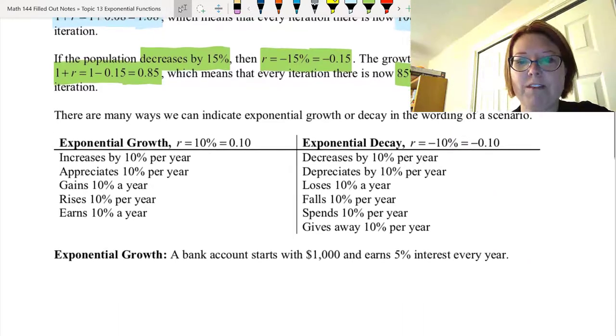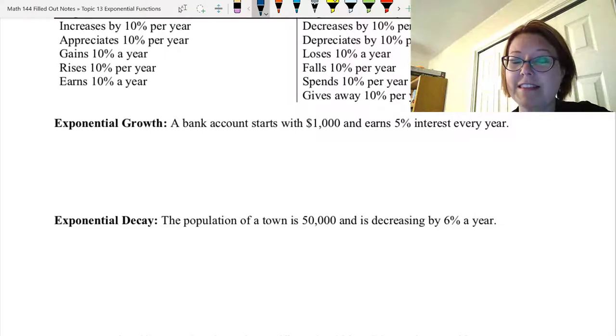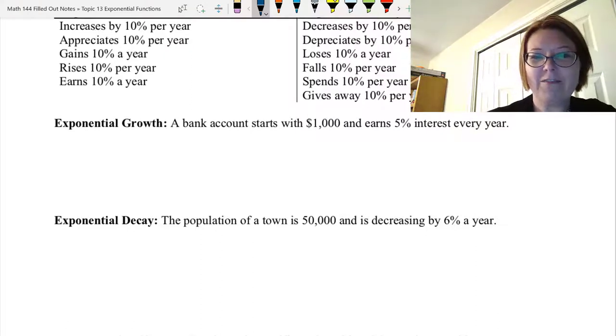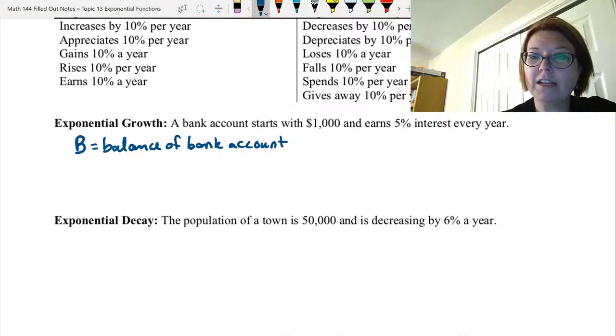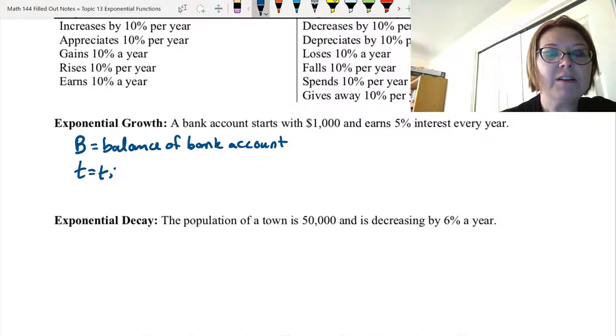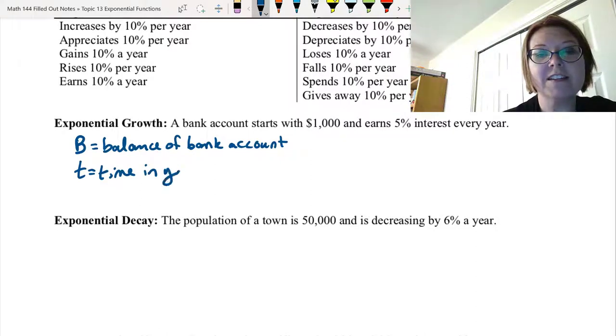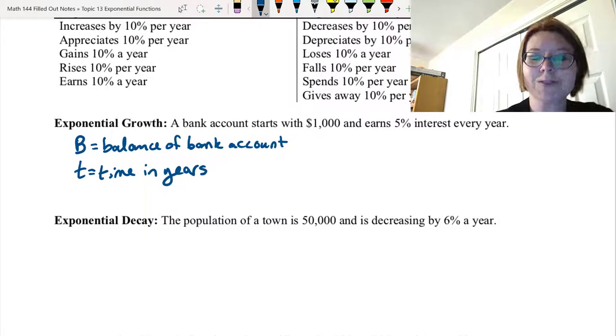Let's look at a couple of examples. Suppose we start with a bank account that has $1,000 and it earns 5% interest every year. Let's start by declaring our variables. So we have a bank account, let's call that a balance. So let's let B, capital B, be the balance of the bank account. And then we're calculating interest every year. So let's let T be the time. And you'd better not just say time. It's the time in what? In this case, it's the time in years.